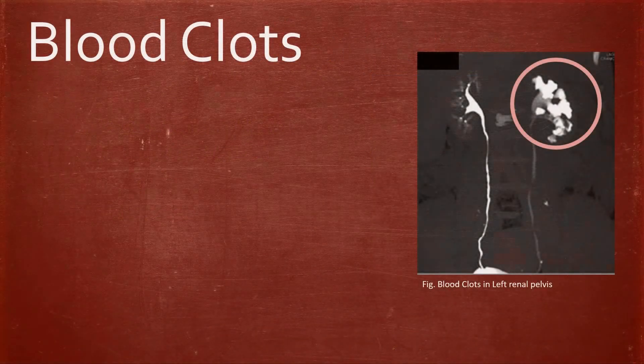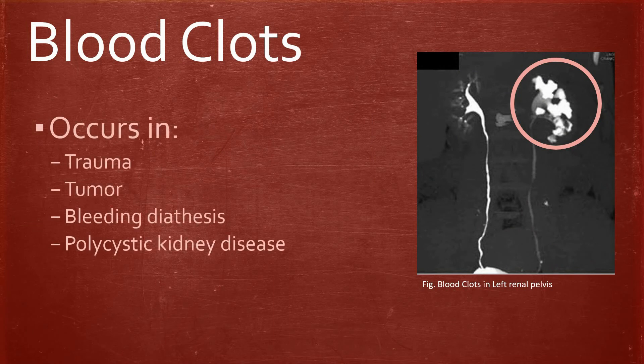The last cause of renal colic is blood clots, which can occur in trauma, tumour, bleeding diathesis, or polycystic kidney disease.